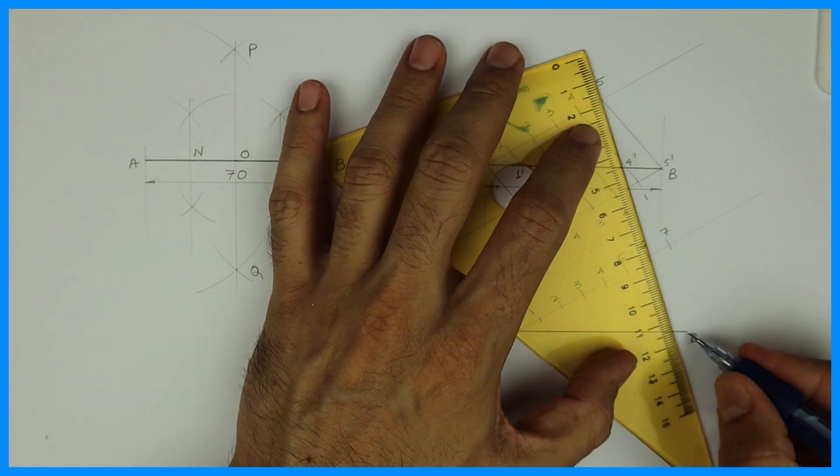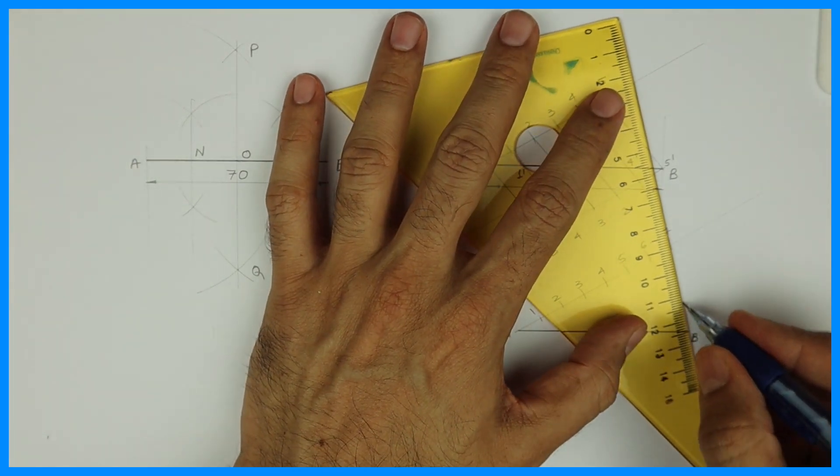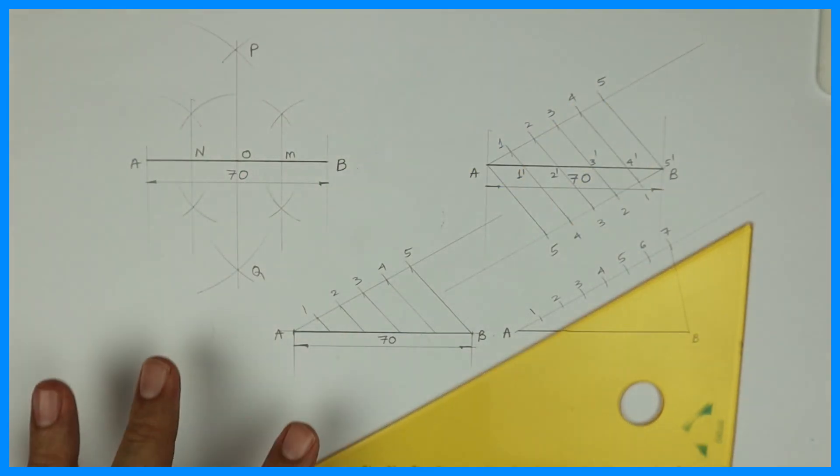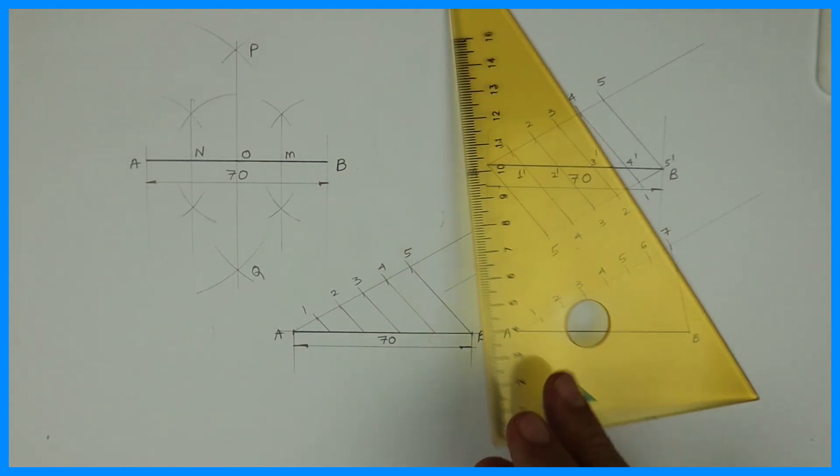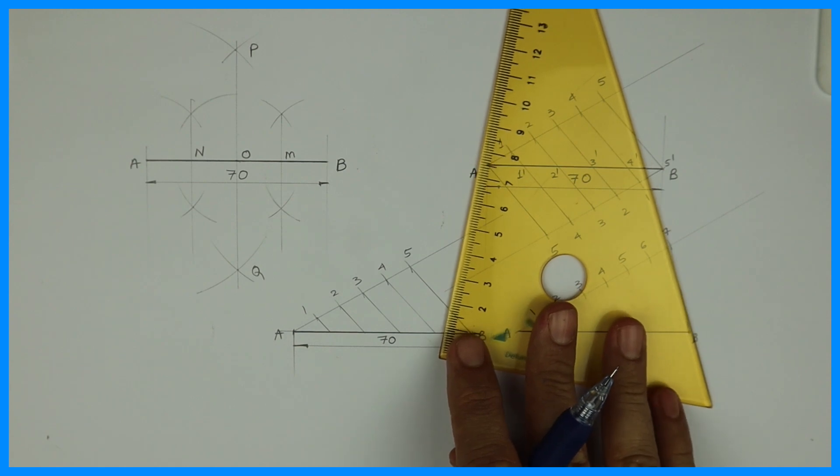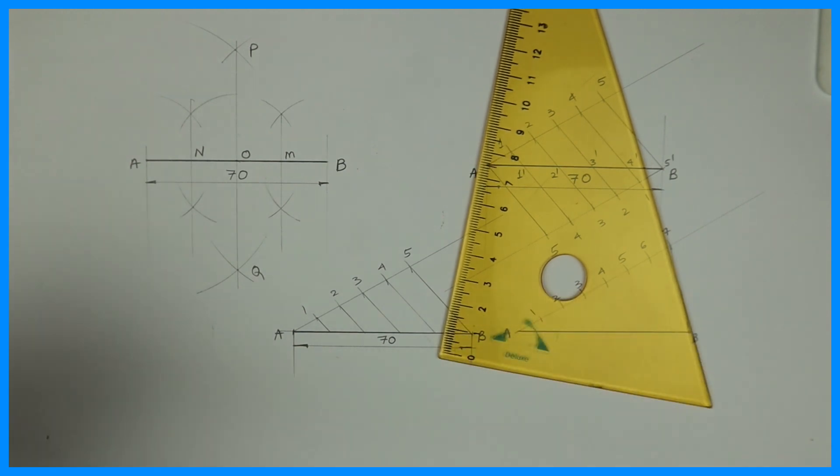Then you join 7 to B. Then again we will do boat method. We can do it downward also, but otherwise we are doing the shortcut method. See this.